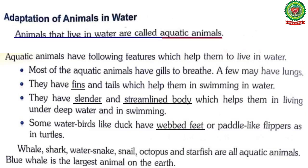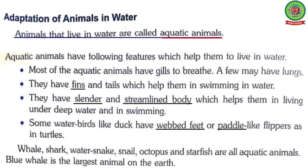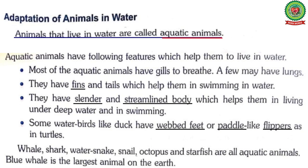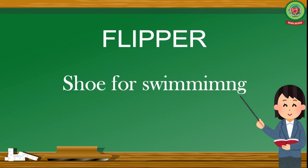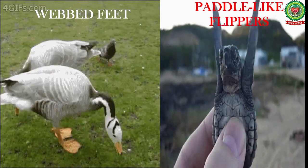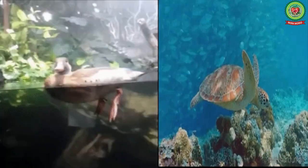Some water birds like ducks have webbed feet, or paddle-like flippers as in turtles. Underline 'webbed feet' and write its meaning: fusion of two or more digits. Underline 'paddle': meaning aid in swimming. Underline 'flipper': meaning shoe for swimming. Webbed feet and paddle-like flippers help animals like ducks and turtles to swim easily in water.